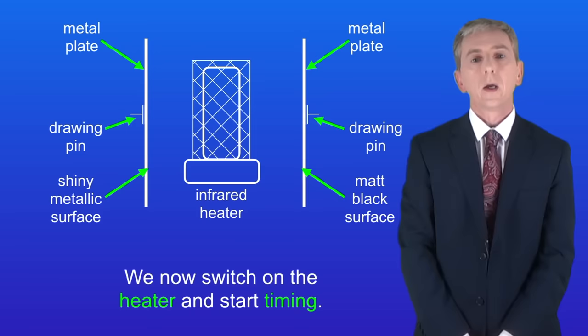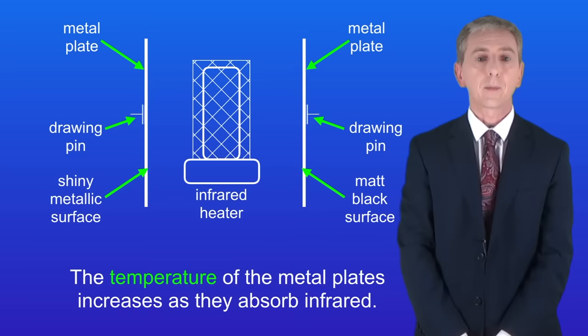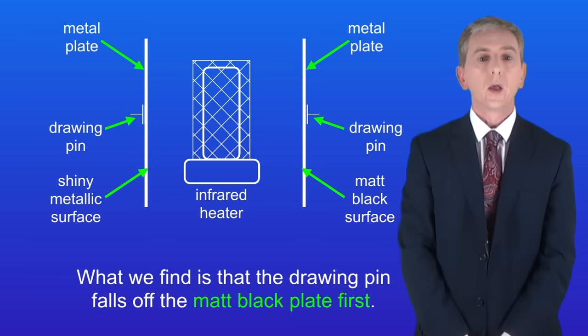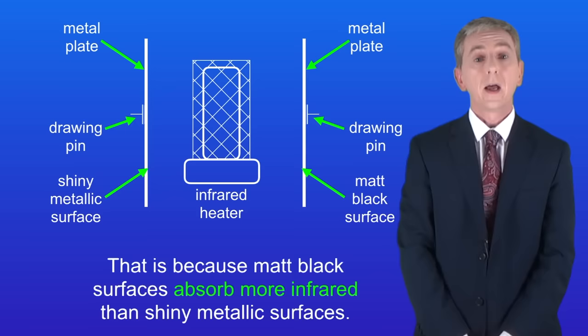We switch on the heater and start timing. The temperature of the metal plates increases as they absorb infrared. We record the time it takes for the Vaseline to melt and the drawing pins to fall off. What we find is that the drawing pin falls off the matte black plate first, because matte black surfaces absorb more infrared than shiny metallic surfaces.